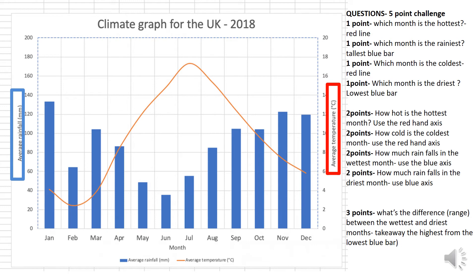You are going to pick five points worth of questions and answer them on a piece of paper, then take a picture of your answers to upload to your teacher. For example, you could pick two two-point questions and one one-point question, or three one-point questions and one two-point question. Answer them on a piece of paper, take a picture, and upload them to your teacher.